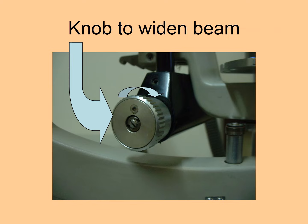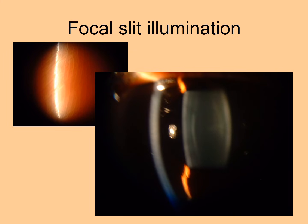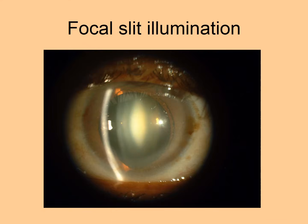The beam can be broadened or narrowed using the knob at the side of the illumination column. By narrowing the beam we can get focal slit illumination, and this is the type of illumination that gives the slit lamp its name. Using a narrow slit allows us to see the anterior structures of the eye in an optical section — as though you are cutting the eye open with an optical knife and seeing it in a longitudinal section. Here we can see the center of the lens showing nuclear sclerosis, which is very clearly noticeable with a narrow focal slit.